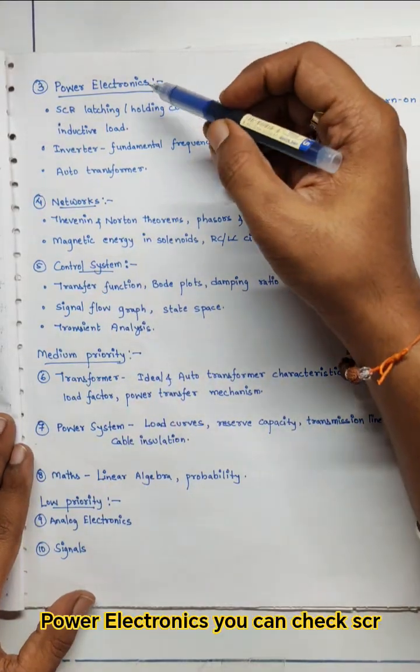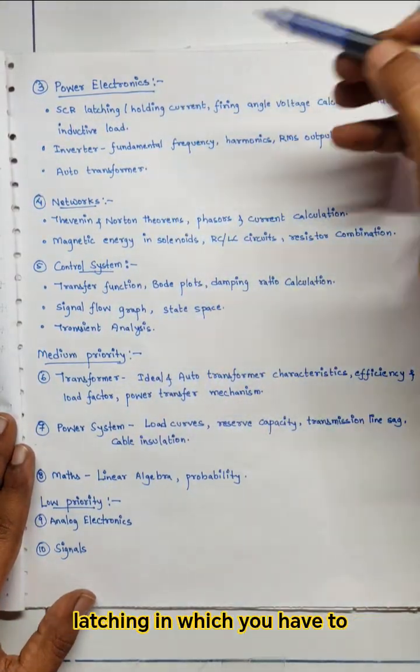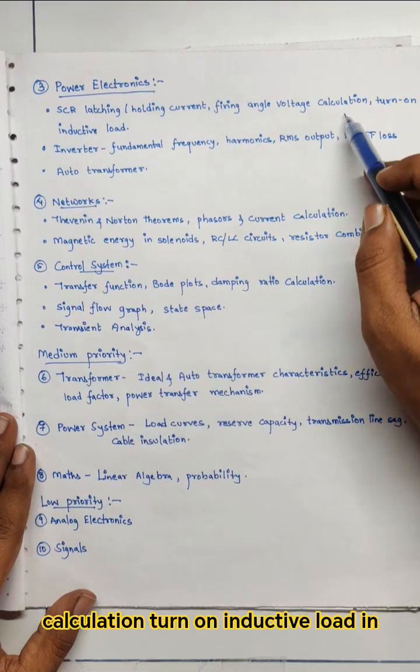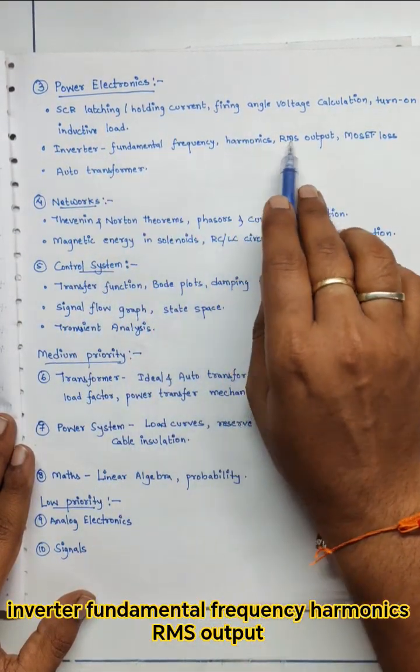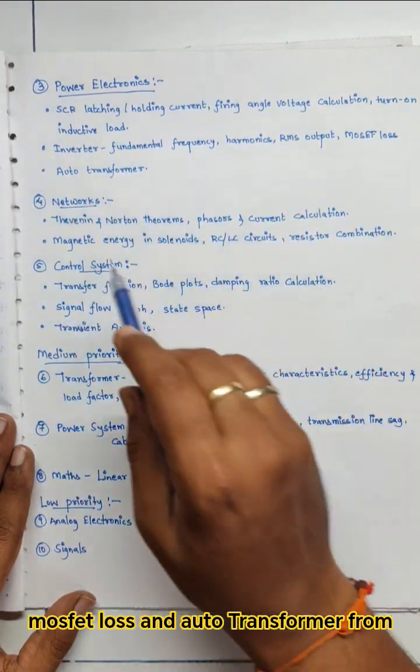Next talking about power electronics, you can check SCR latching in which you have to see holding current, firing angle voltage calculation, turn on inductive load. In inverter: fundamental frequency, harmonics, RMS output, MOSFET loss and auto transformer.